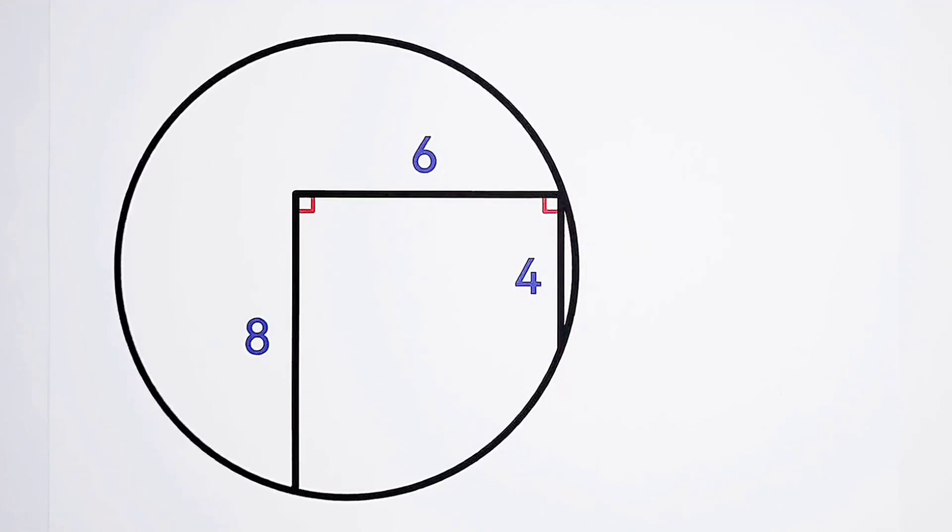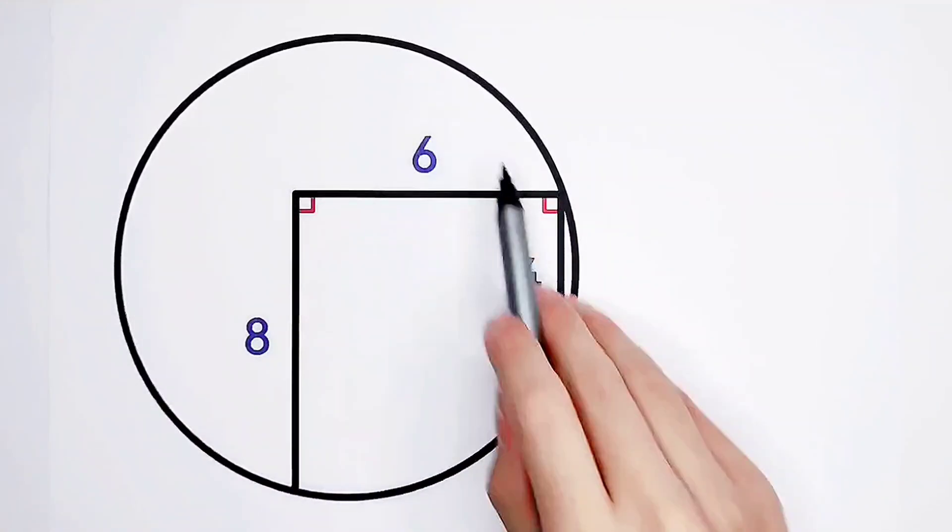A fantastic geometry question is coming! You should be able to solve this problem. Let's have a try together. A circle and three line segments are given. The question is, what is the area of the circle?